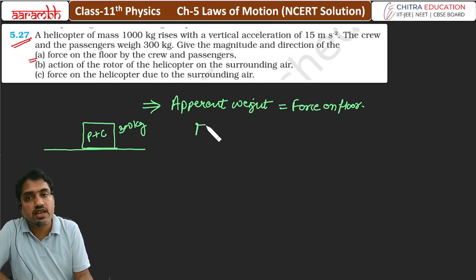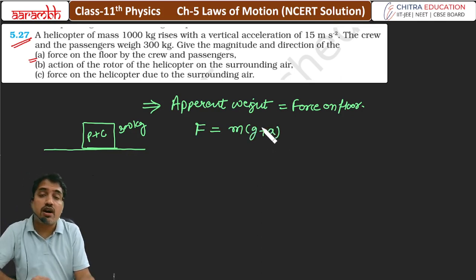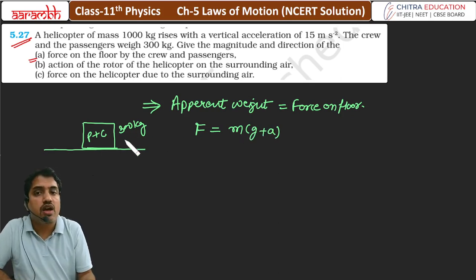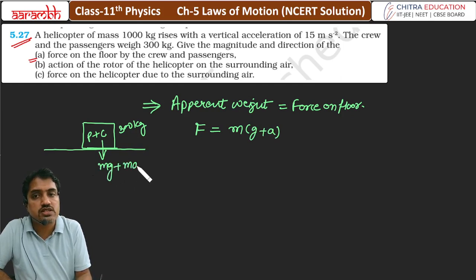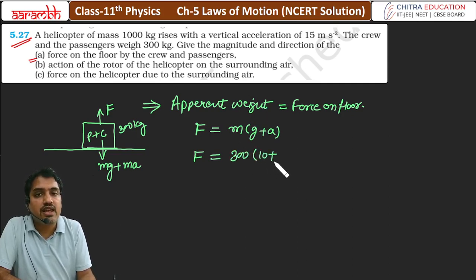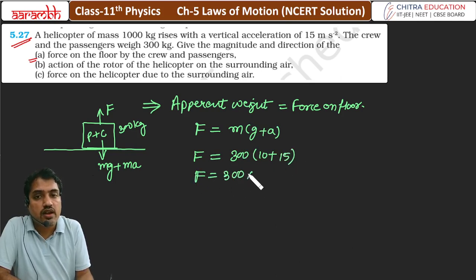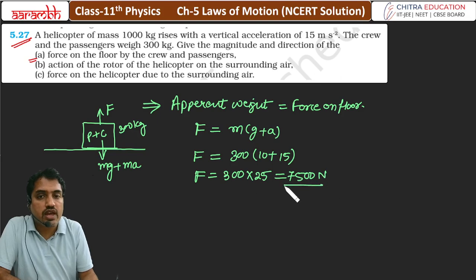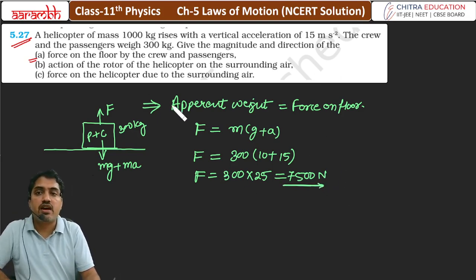Toh yeh jo first case mein humko force nikalna hai, woh m(g + a) ke barabar hota hai jab upper direction mein move karega. Toh F = 300 into (10 + 15) = 300 into 25 = 7500 Newton. Toh yeh first part ka hamara answer aaya.